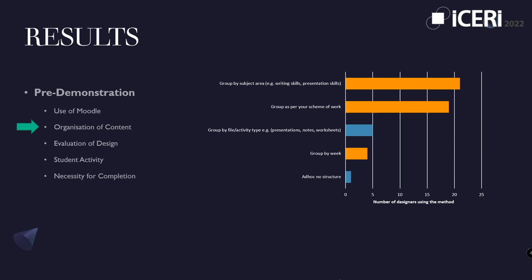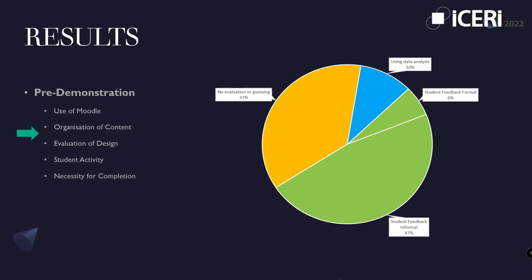Designers were asked to identify their existing evaluation mechanisms. Most used some form of evaluation, with 53% using student feedback and 10% using data; the remaining 37% did not evaluate or guessed. This suggests that although designers previously indicated they structured their VLE courses, a significant proportion did not evaluate them or used informal feedback to influence improvements. Very few used data analysis, possibly indicating that this method is either unfamiliar, perceived as difficult, or they lack the technical skills.